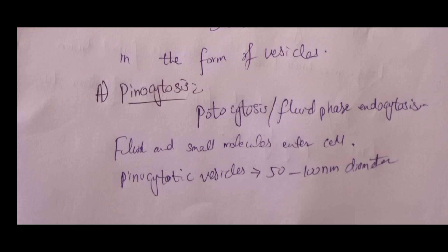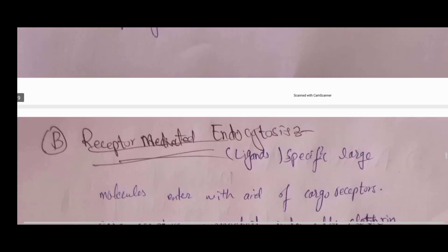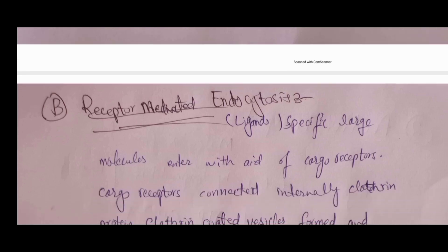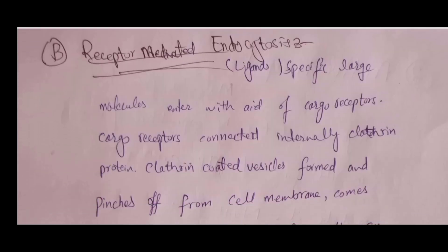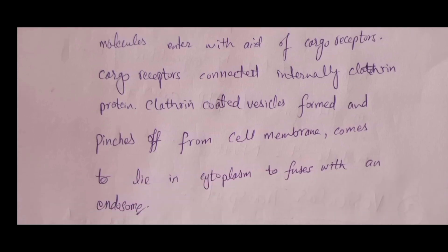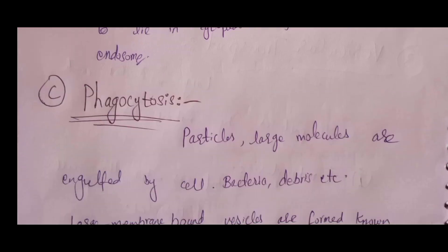Pinocytosis means 'cell drinking' of fluids; it is also known as fluid-phase endocytosis. Small molecules enter the cell, and small endosomes are formed by invagination of the cell membrane containing the enclosed substances. These pinocytosis vesicles range from 50 to 100 nanometers in diameter. The second type is receptor-mediated endocytosis, in which specific large ligand molecules enter the cell via clathrin-coated receptors present on the outer surface of the cell membrane. These form clathrin-coated vesicles that pinch off from the membrane and fuse with endosomes.